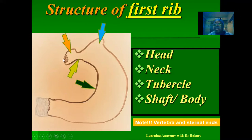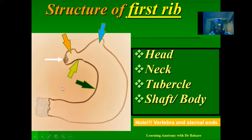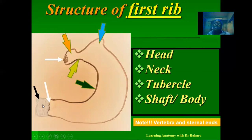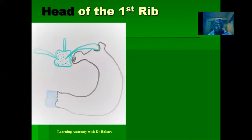The first rib has two ends: the vertebral end, which is the posterior end where it connects with the body of the thoracic vertebra, and anteriorly the sternal end. The sternal end is connected to the costal cartilage, highlighted in blue. The anterior end of the rib does not have a direct connection with the sternum — it connects first to the costal cartilage, which then connects to the sternum.